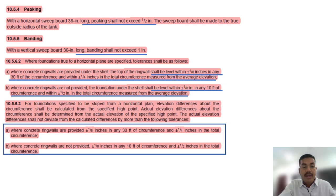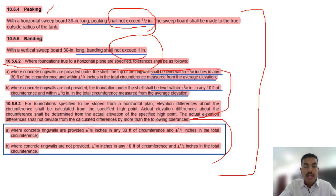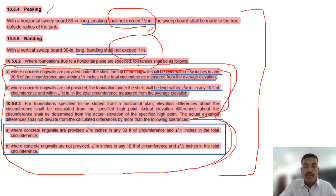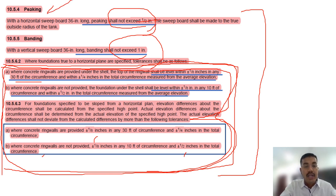For peaking and banding: in API 650 it is one inch and one inch, but in API 653, peaking is half inch and banding is one inch. For concrete ring walls, the tolerance requirement is ±1/8 inch within any 30 feet of circumference, ±1/8 inch within any 10 feet of circumference, and 1/2 inch for the total circumference. This is the requirement for tank foundations and usually appears in open-book questions.